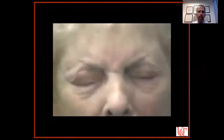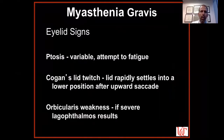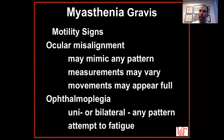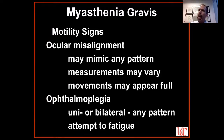Here we're checking orbicularis strength. This woman is trying to keep her eyes closed as tightly as she can, and when I let go of either lid, it just flops back — there is no tone in these orbicularis muscles. This has got to be myasthenia. So look for variable ptosis, attempt to fatigue it, look for the lid twitch, check orbicularis strength. As for motility signs — myasthenia can mimic any pattern: unilateral INOs, bilateral INOs, fourth nerve palsies, third nerve palsies, sixth nerve palsies. Measurements of alignment may vary.